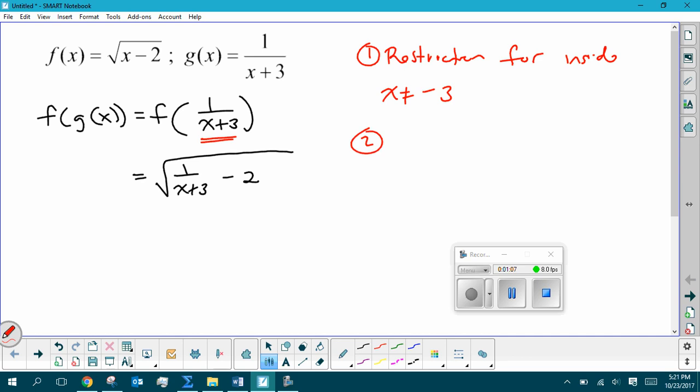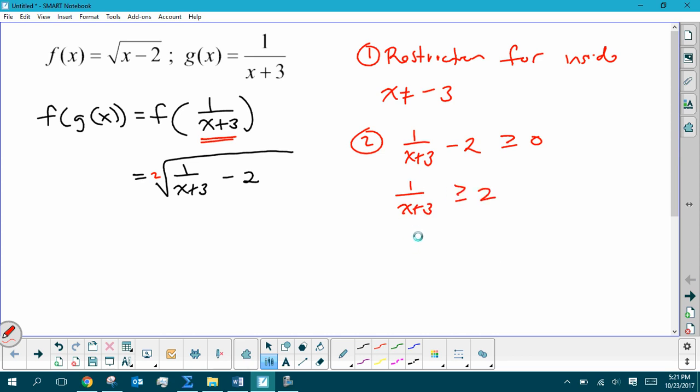But the second part, then, is to look at our final function here. In that final function, we know we cannot take, because it's a square root, we cannot take square roots of negative numbers. So what we want to do is we want to force the 1 over x plus 3 minus 2 to be greater than or equal to 0. So I go through and I add 2 to both sides. 1 over x plus 3 greater than or equal to 2. Multiply both sides by x plus 3.